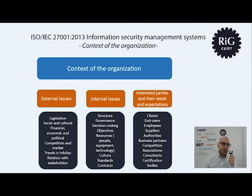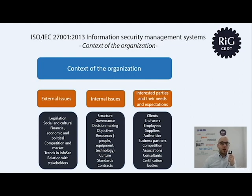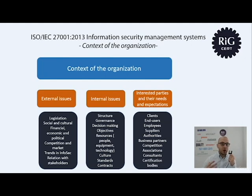The first requirement: the organization has to identify the external and internal issues that are relevant to its information security management system and which are capable of affecting the expected outcomes of that system. In plain English, expected outcomes means why the organization implemented this system — so it must identify issues that can affect the reasons why the system was put in place.